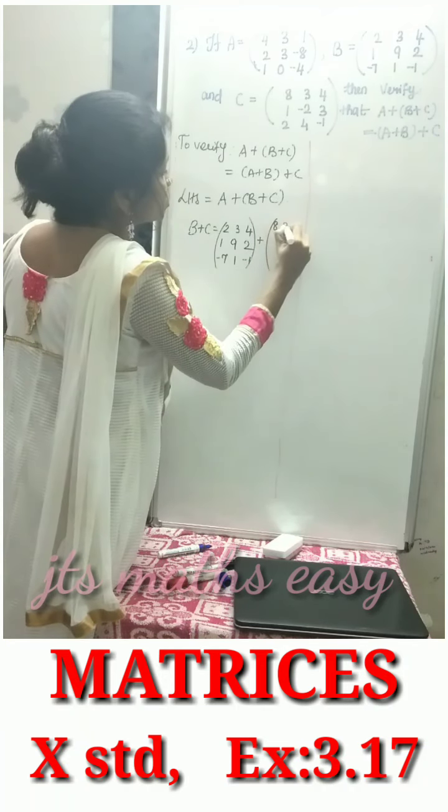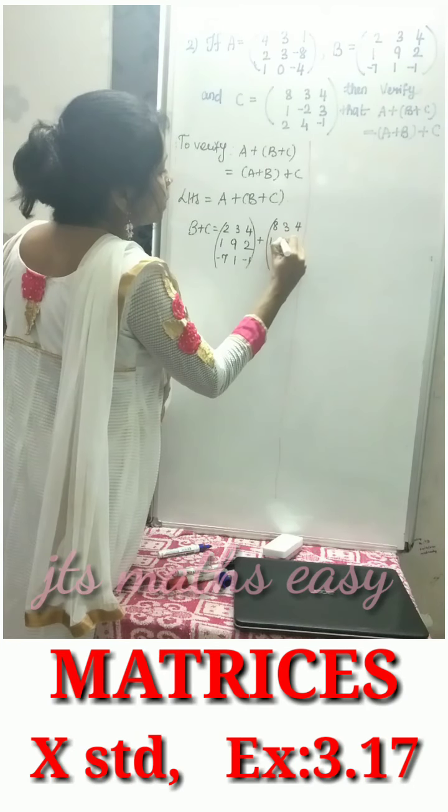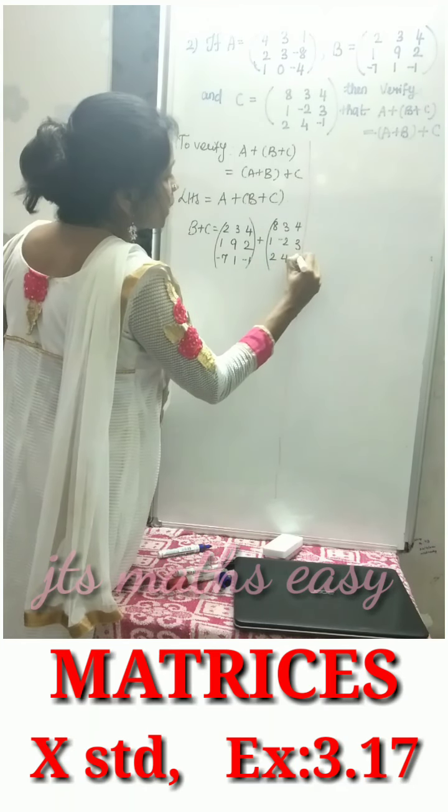Next, matrix C is 8, 3, 4, 1, minus 2, 3, 2, 4, minus 1.